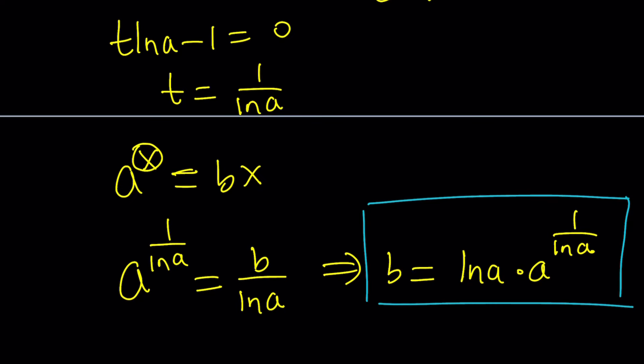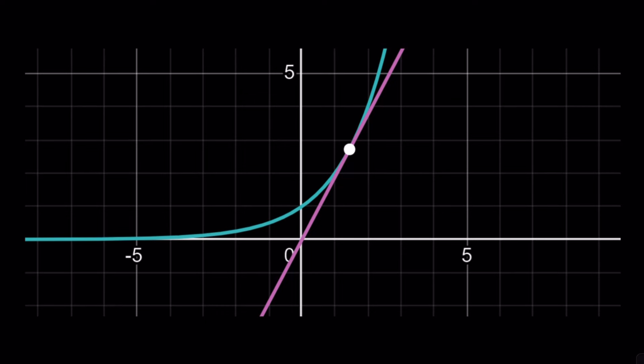We got this value for the tangency, and I'd like you to think about what would happen if you want them to have no solutions — let us know in the comments below. I'll finish up with this graph in Desmos where they are tangent to each other, using those values of a and b that work. Anyway, this brings us to the end of the video. Thank you for watching — please comment, like, and subscribe. I'll see you next time!